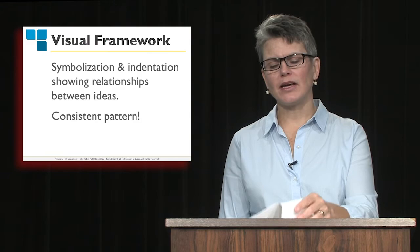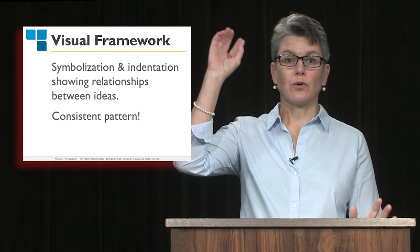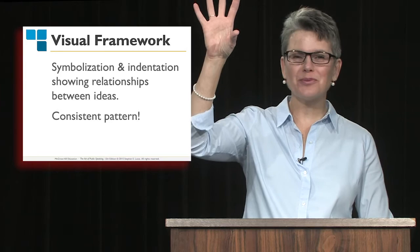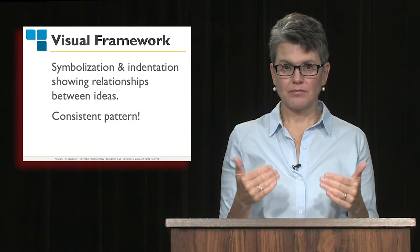One thing I'm going to emphasize is something called a visual framework. Outlining has two really critical parts. One is the symbolization — we're going to use Roman numerals. If you use Roman numeral one, Roman numeral two, then you might have a capital letter A, then a small number one, then a small letter A, and so on. A Roman numeral one is a big, significant piece in your speech, and then the next symbol you use, maybe capital letter A, is going to be subordinate to that Roman numeral one because of how we use symbolization.